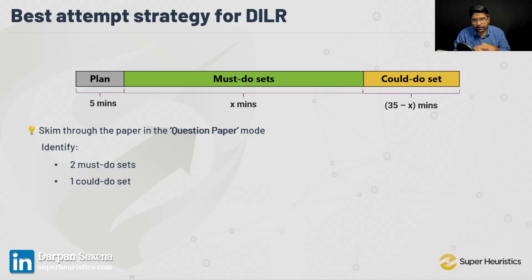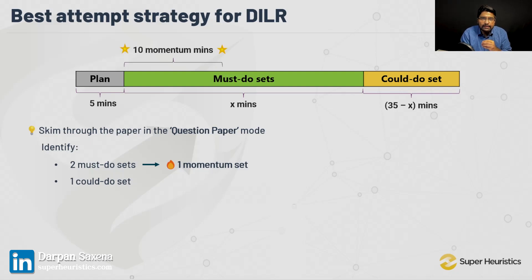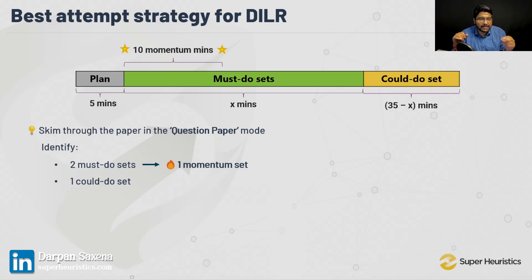Here's where psychological games come into play. Among your two must-do sets, you need to identify one momentum set. This is probably something you're hearing for the first time. One of those two must-do sets has to be your momentum set — the very first set you attempt in DILR. This is the first set you tackle in the first 10 minutes after completing your planning phase. This 10-minute momentum slot is so crucial — this is where you build something that drives you through the entire DILR section.